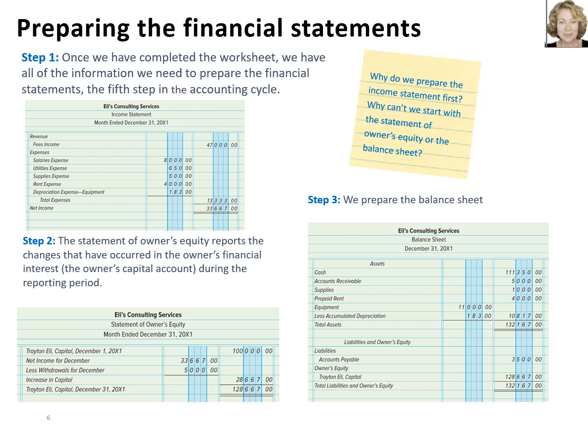As part of step two, we prepare the statement of owner's equity by entering the beginning capital of $100,000, the net income of $33,667, and the withdrawals of $5,000. We subtract the withdrawals from the net income to arrive at the increase in capital of $28,667, which we add to the beginning capital to calculate the ending capital of $128,667.